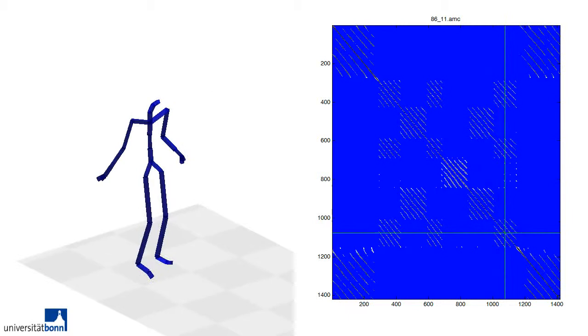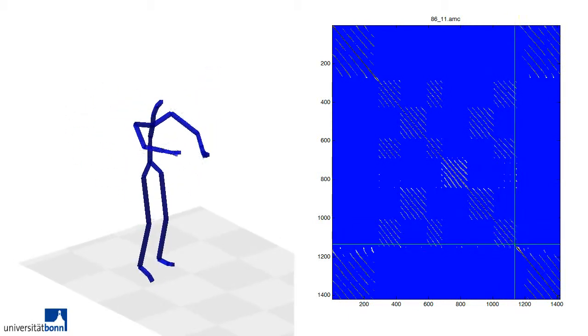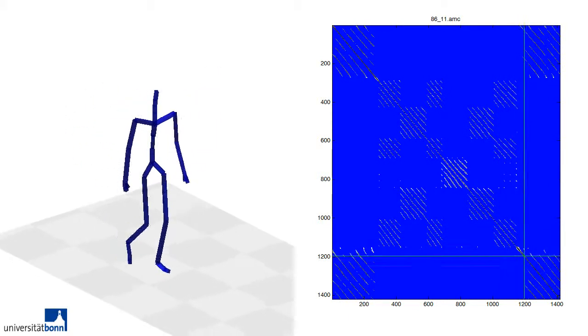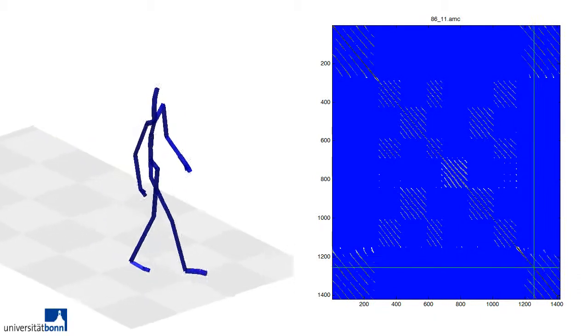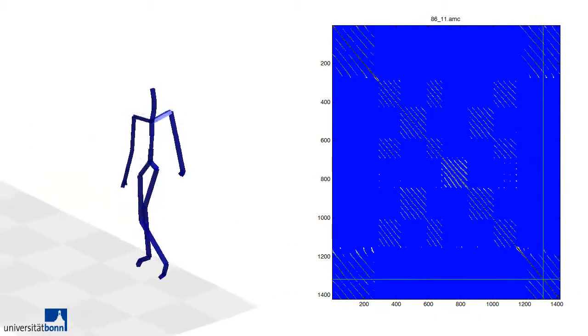The square regions formed by these parallel diagonals are the distinct activities in the sequence. The diagonals indicate the various similar motion primitives in each structure.